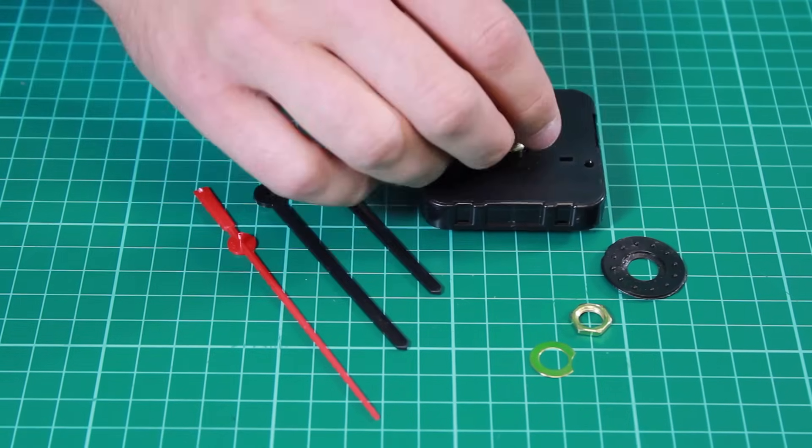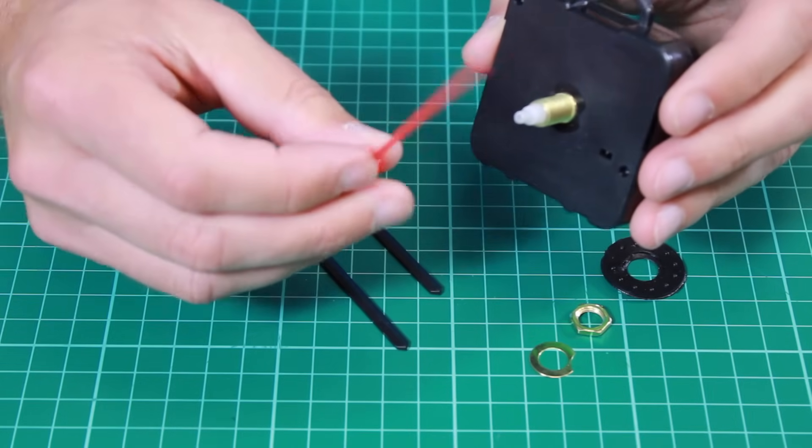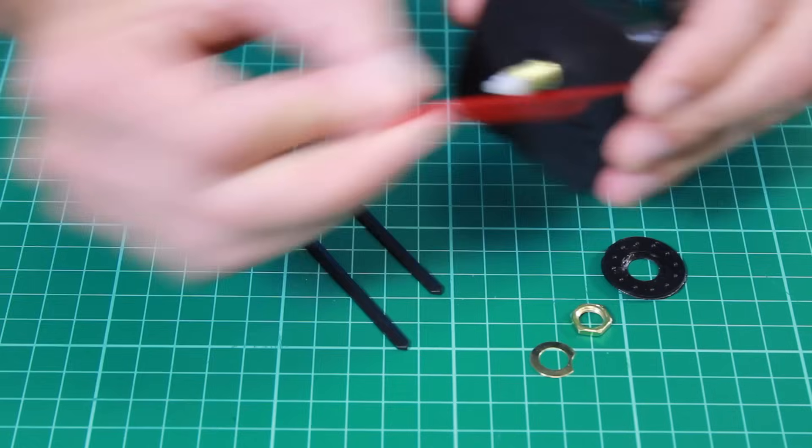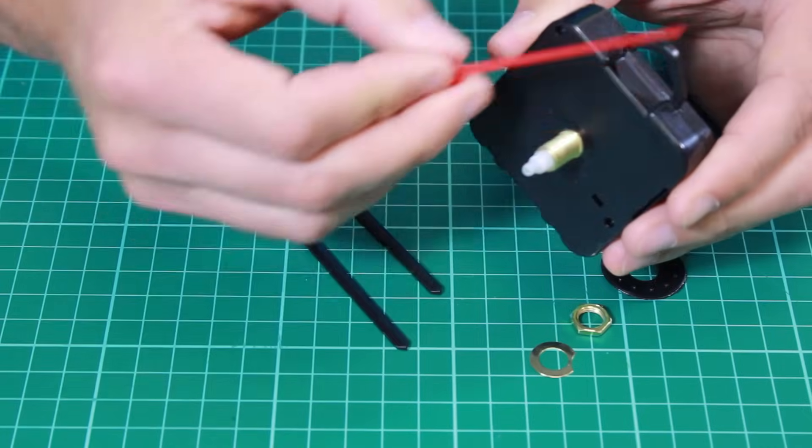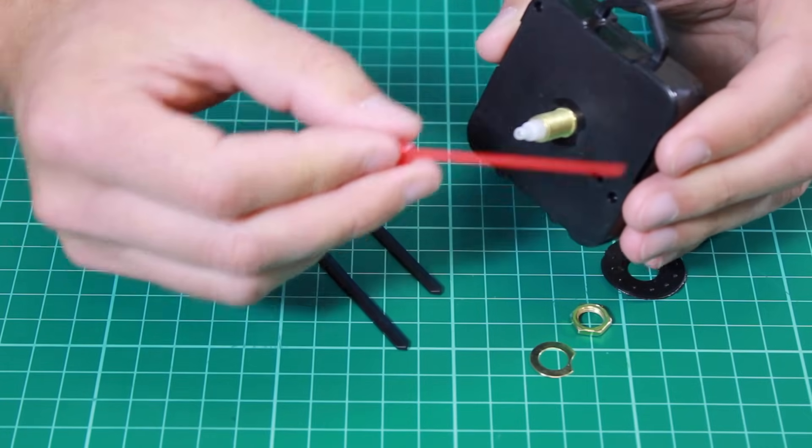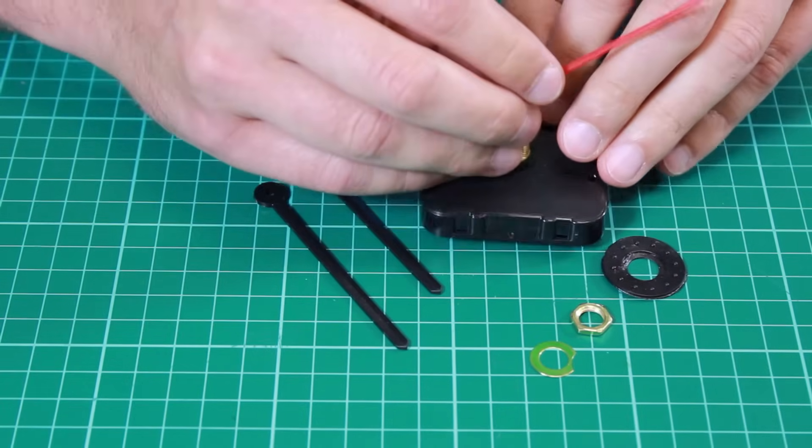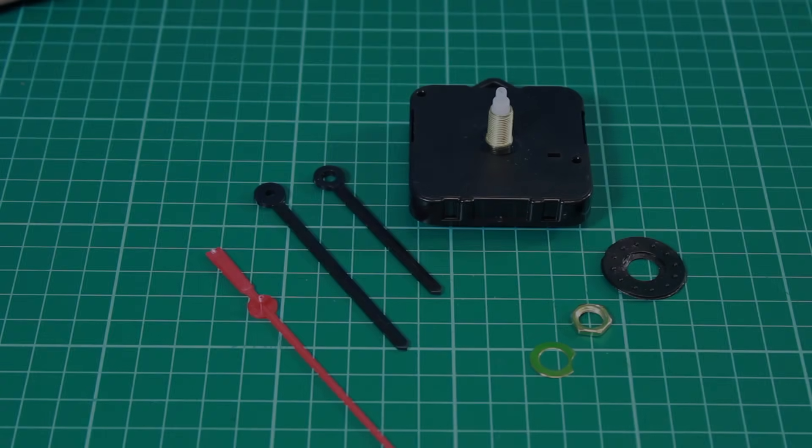So one last point is that the construction of these clocks is very good. So if we do things like put the hands on and off and on and off, we can see that the movement stays together nicely and none of the parts come to pieces. So it's a really nice little clock movement and now let's see how we can assemble all these parts to create an actual clock.